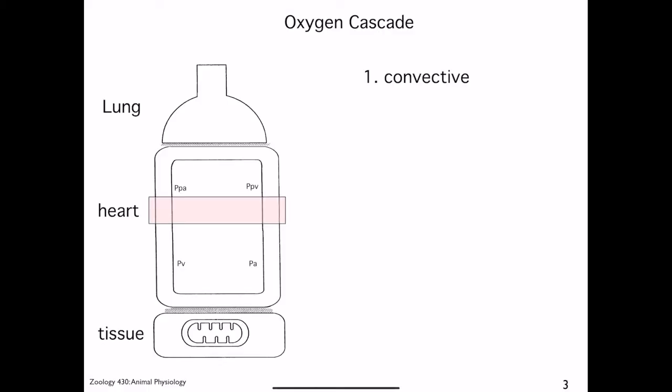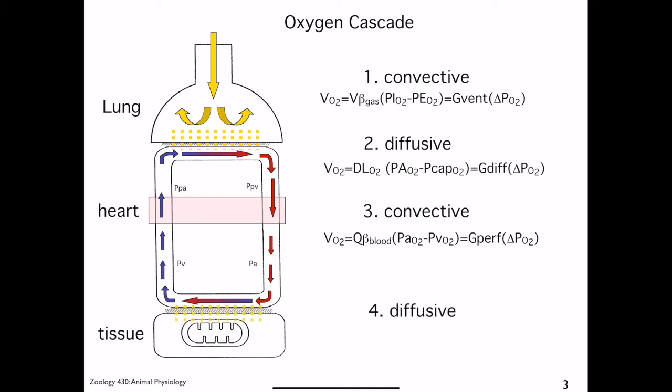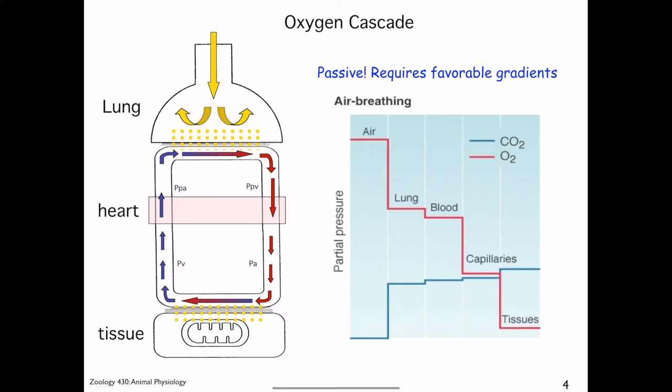The lungs expand, generating negative intrapulmonary pressure, which sucks air into the lungs by convection. Inside the alveoli, the oxygen diffuses into the blood capillary, where it gets taken up by the hemoglobin. The heart then pumps the blood around the body, again by convection, so that the blood picks up O2 in the lungs and delivers it to the tissues, where it enters the cells via diffusion, where it's being consumed in the mitochondria. All of this movement of O2 is passive. The oxygen cascade is driven by favorable oxygen gradients. The respiratory system is brilliantly designed to maintain these gradients all along the way, so that oxygen is delivered in the right direction.